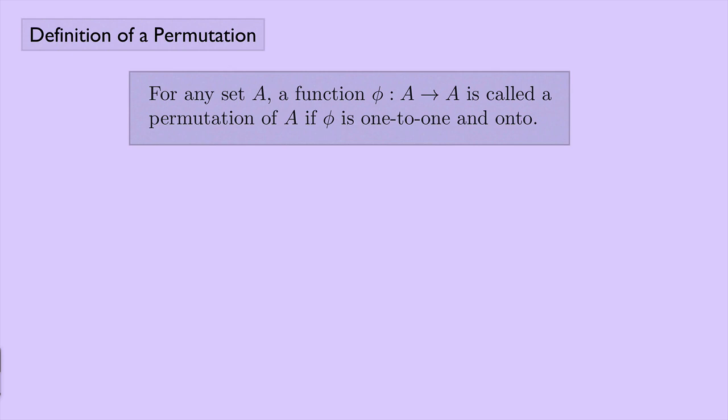Now we've been looking at sets of four objects, like one, two, three, and four. And so if we have a set A, and then we have our function phi, which would go from A to itself, an example of a permutation maybe would take one to two, two to four, leave three alone, and take four to one.